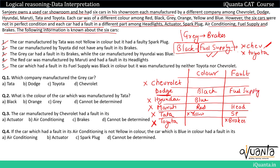We had one more clue that the gray car has a fault in its brakes. We have only two spaces left — Chevrolet and Toyota — but Toyota doesn't have a fault in its brakes. So very clearly, the gray car with fault in brakes belongs to Chevrolet.